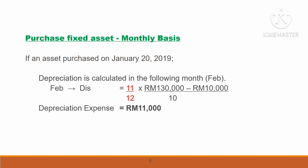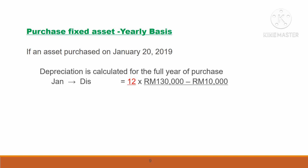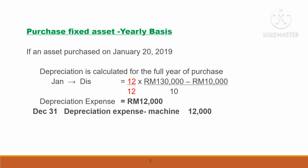We make an adjusted journal entry: debit depreciation and credit accumulated depreciation at the end of the accounting period when using the monthly basis. For the yearly basis, if the purchase is on January 20th, we include the month of January and calculate 12 over 12 months. Given cost RM$130,000 less residual value divided by useful life, depreciation for the year is RM$12,000. The adjusted journal entry is: debit depreciation and credit accumulated depreciation RM$12,000 for yearly basis.